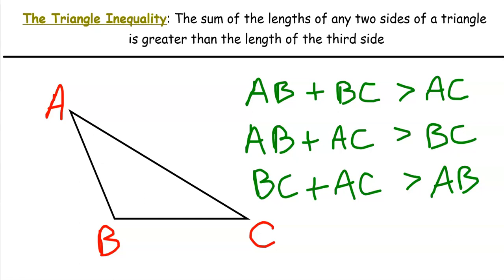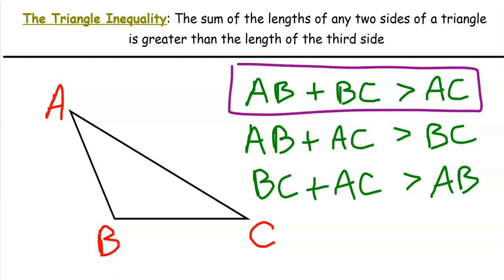Go ahead, pause the video, copy down the triangle inequality as well as the inequalities you see in the diagram, and come back when you're ready. All these inequalities are saying that any two sides of the triangle must add up to be greater than the third. But really, if we know what the three sides of the triangle are, it doesn't really matter what the longest side plus another side is — if you have the longest side, no matter what side you add to it, it's still going to be greater than the third.